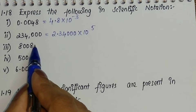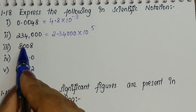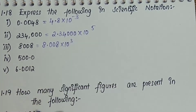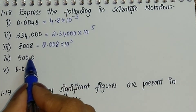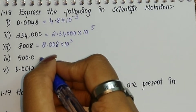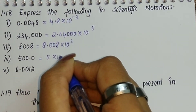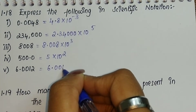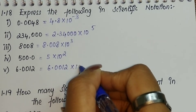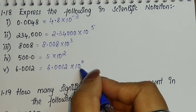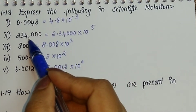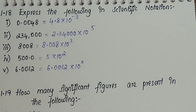The next number is 8008. Moving the decimal from the right towards the left: 1, 2, 3 places gives 8.008 × 10³. Similarly, the next one gives 5 × 10². The last one, 6.0012, already has the decimal in the right place, so it is 6.0012 × 10⁰, and since 10⁰ = 1, you get the same number. Scientific notation is used to shift and show the significant figures in your answer.